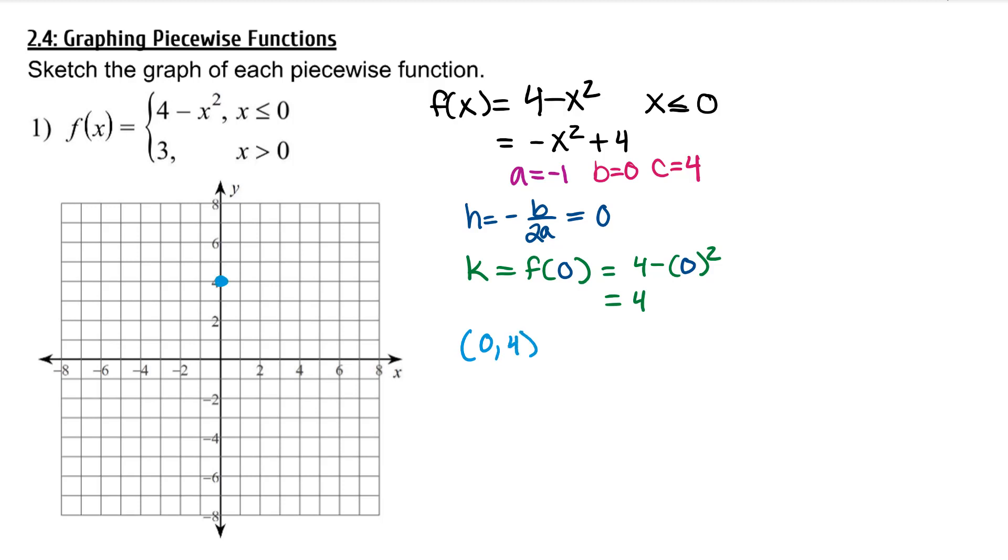Because a is negative 1, when we move one unit away from the vertex, we'll rise a. And two units will rise 4a. So let's graph this parabola.